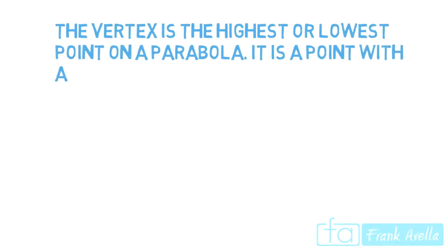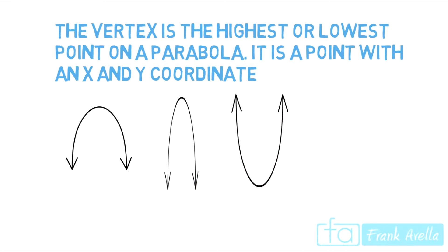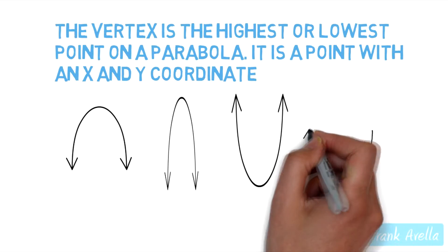The vertex is the highest or lowest point on a parabola. It is a point with an x and y coordinate. Right now I'm going to draw a couple of parabolas for you below. The parabola has a u-shape.